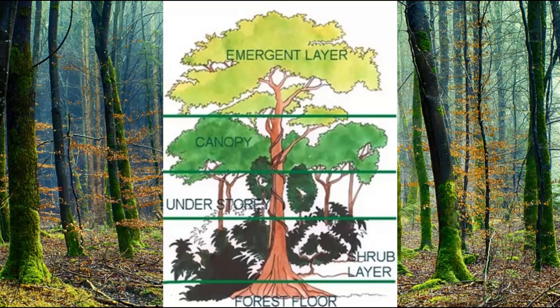This diagram gives you a clearer view of the different parts. You have the emergent layer, the canopy, the understory, the shrub layer, and at the very base, you have the forest floor. Take a second, look at it, let it register, and we are moving on.